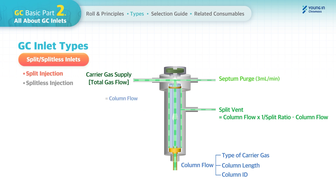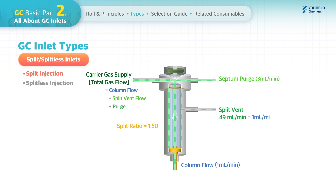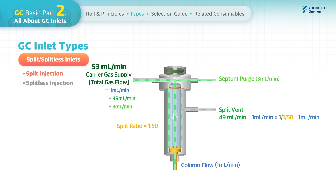In the split injection mode, total gas flow is set as follows: for example, if you set the column flow at 1 mL/min and the split ratio is 1:50, the split vent flow will be calculated at 49 mL/min. The total gas flow is set accordingly, and after the gas flow stabilizes, the sample is injected.